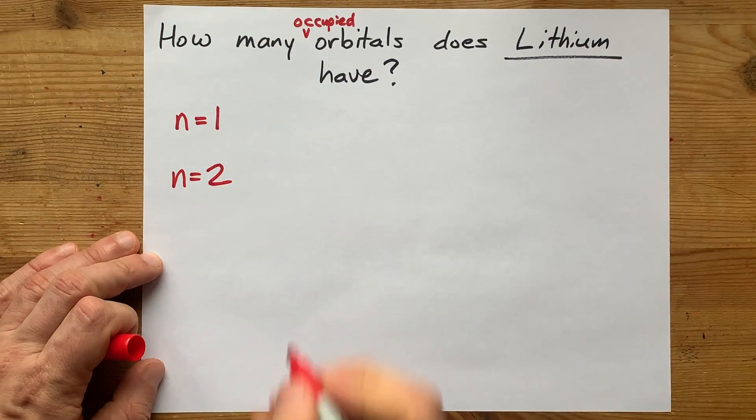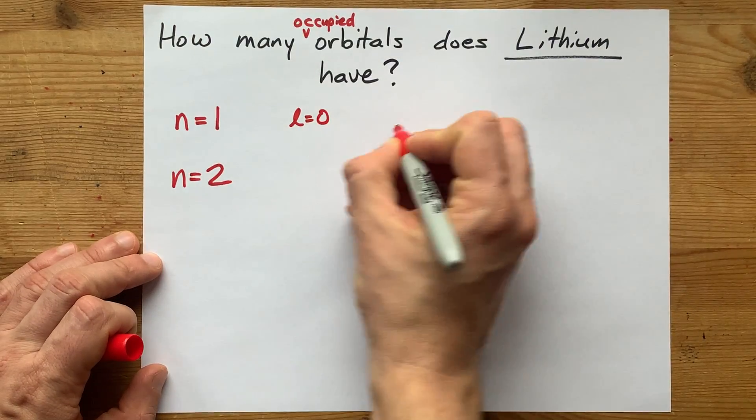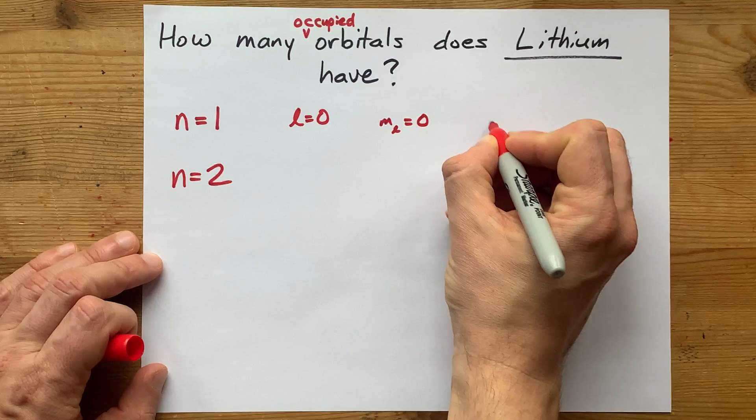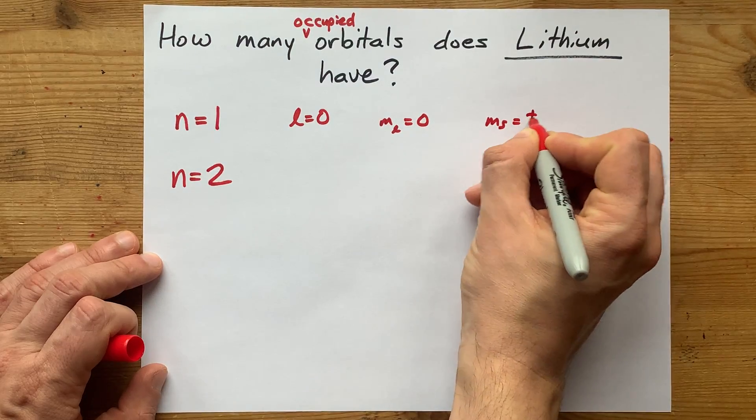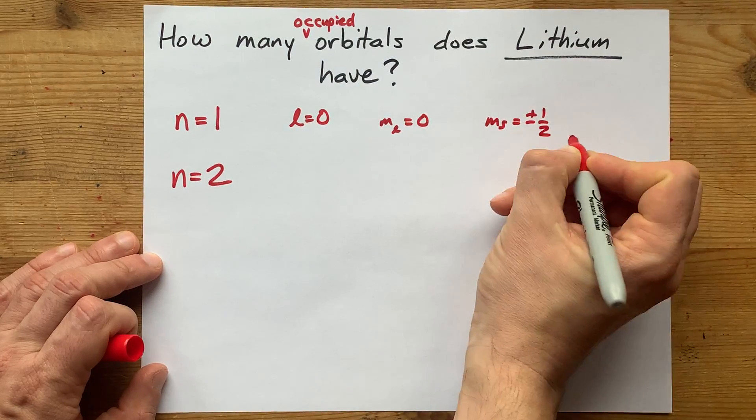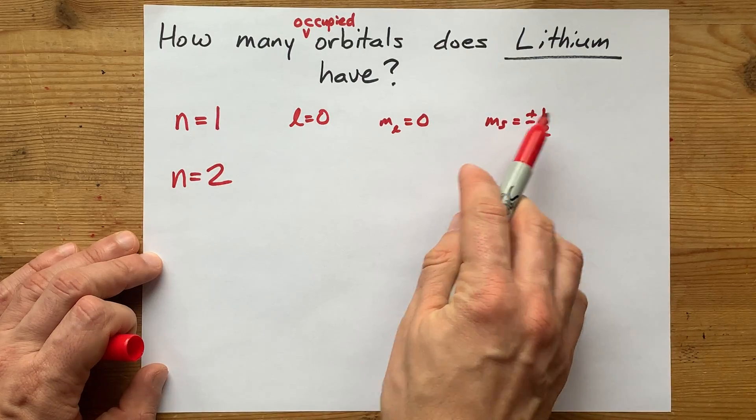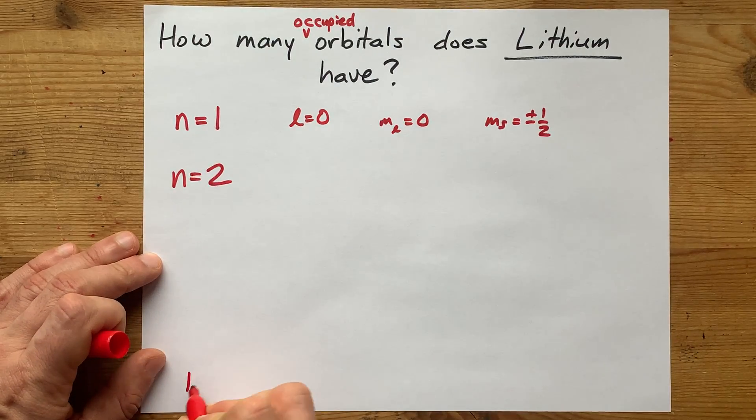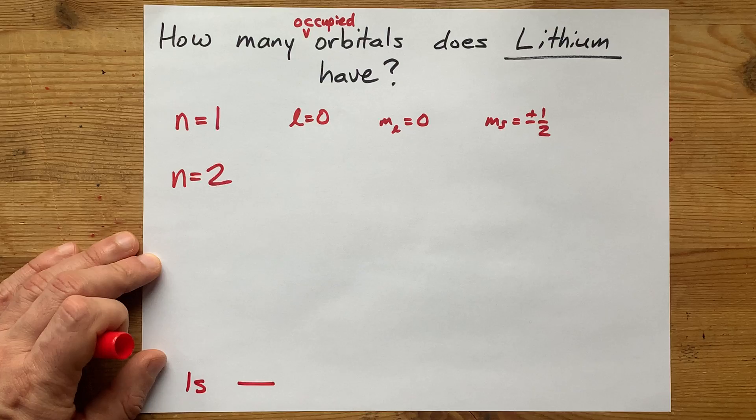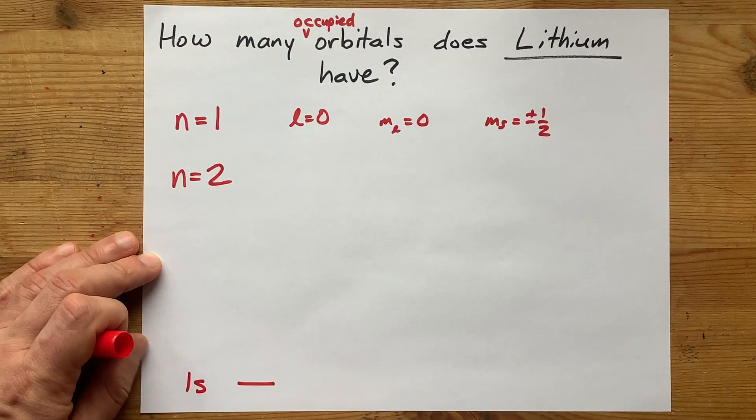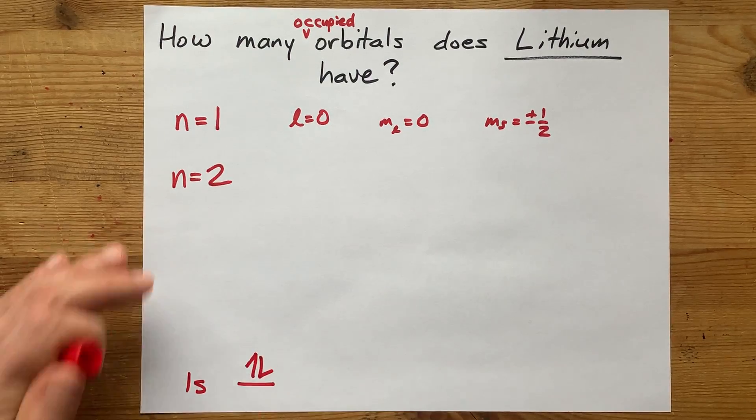When n equals 1, you're limited to l equals 0, ml equals 0, and then ms can be either plus or minus 1 half. That's really only two options, and that's why the 1s sublevel, or rather the entire first shell, can only hold two electrons total.